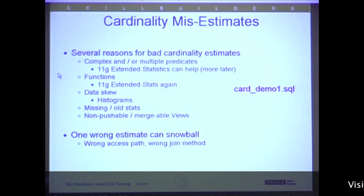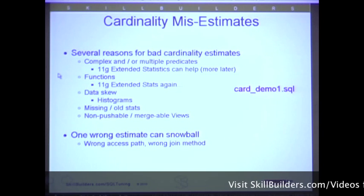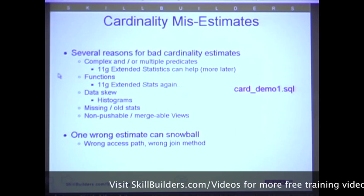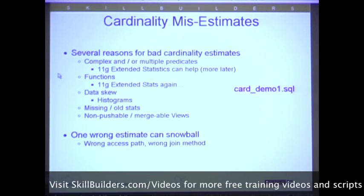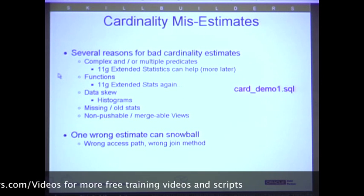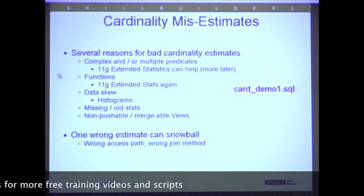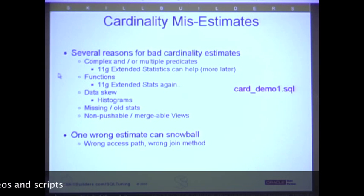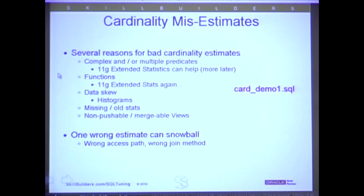Data skew is another issue — we should use histograms, though histograms are not perfect and often become stale fairly quickly. Missing or old stats should become more of a thing of the past, certainly with the auto task that runs on a nightly basis. Views — especially non-pushable and non-mergeable views that won't accept a filter from a WHERE clause — cause problems. The filter cannot be merged in, so it materializes the view, gives a guessed cardinality, and then applies the filter to the materialized view. One wrong estimate in a complex multi-step plan can cause the whole rest of the plan to be wrong.